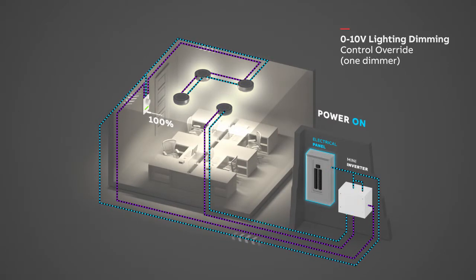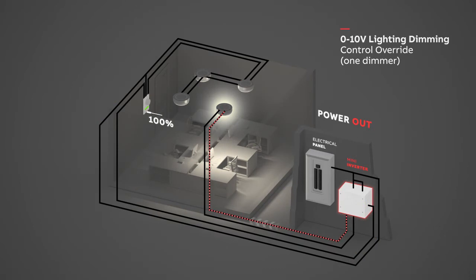When the main power goes out, the Mini Inverter LCO will bypass the dimmer so that even if the dimmer is off or down, the lights wired as emergency lighting will turn on at full brightness powered by the Mini Inverter.